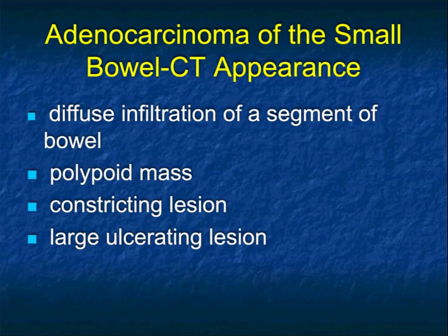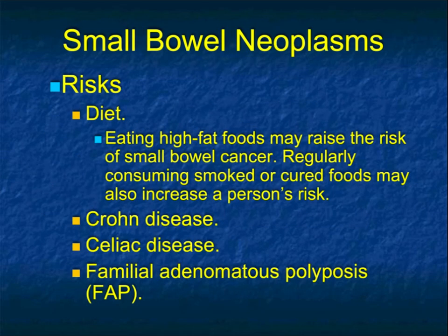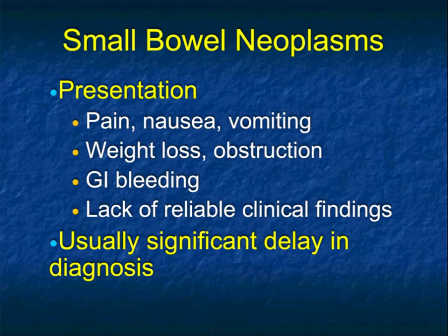For adenocarcinomas, the earliest appearance might be diffuse infiltration of a segment of bowel, which when subtle can easily be missed. You might also see polypoid masses, a constricting lesion causing obstruction (which makes it easier to see), or a large ulcerating lesion that can be exophytic as well. Adenocarcinoma is more common proximally — most common in the duodenum — while lymphoma is more common distally. Its clinical presentation is variable, associated with conditions like Crohn's disease, sprue, and celiac disease, and also more frequent in patients with familial adenomatous polyposis (FAP). High-fat diet may raise risk. Presentation includes pain, nausea, vomiting, weight loss, obstruction, GI bleeding, or vague abdominal pain — all quite non-specific.